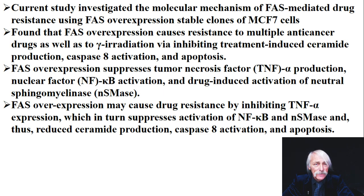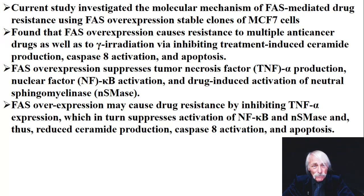FAS overexpression also causes resistance to gamma radiation, which is not directly drug-related. This means FAS overexpression is blocking something that normally controls cell proliferation at the fundamental level of cell biology — probably something to do with apoptosis. One of the mechanisms involves triggering programmed cell death, and that's where we can entertain a discussion of the very important sphingolipid known as ceramide. Ceramide production is one of the initial factors that turns on caspase activity, ultimately leading to cellular apoptosis.